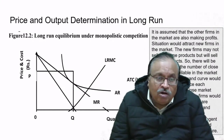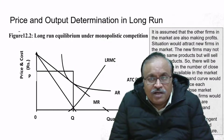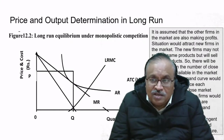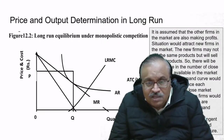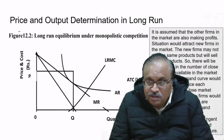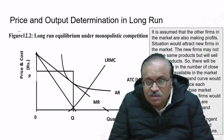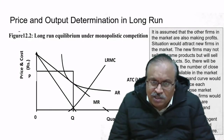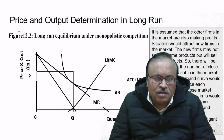Price and output determination in the long run: it is assumed that other firms in the market are also making profits, which attracts new firms. The new firms may not sell the same products but will sell similar ones. There will be an increase in the number of close substitutes, and hence the demand curve shifts downwards as each existing firm loses market share. Entry continues as long as economic profits exist.